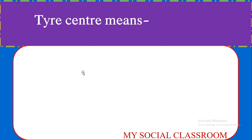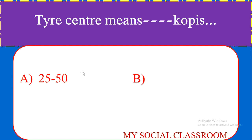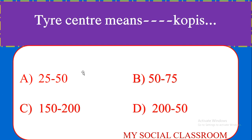Tire center means how many copies? Options: 25 to 50, 50 to 75, 150 to 200, or 200 to 500 copies. Correct answer: 200 to 500 copies.